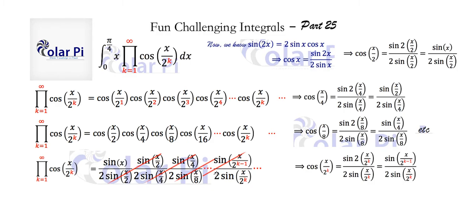We're going to keep crossing out, but the crossing out process doesn't terminate — it goes ad infinitum. The survivors among the finitely many terms displayed are: sine x survives in the numerator. In the denominator we have a factor of 2 for each term, and there are k of them, giving 2 to the power k. Also sine of x divided by 2 to the power k survives.